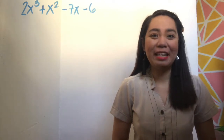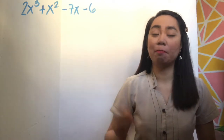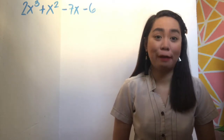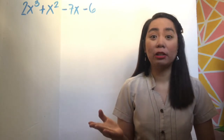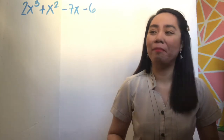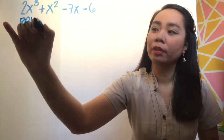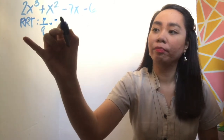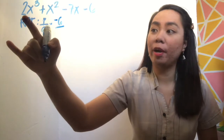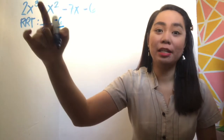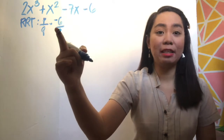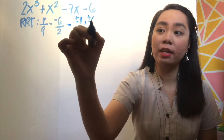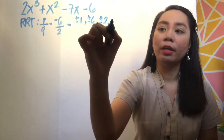For today, let us express 2x cubed plus x squared minus 7x minus 6 into factored form. Since we already know about the rational root theorem, we will apply it again. The theorem is p over q, where p is the constant and q is the numerical coefficient of your leading term, which is 2. Get the factors: positive negative 1, positive negative 6, positive negative 2, and positive negative 3.